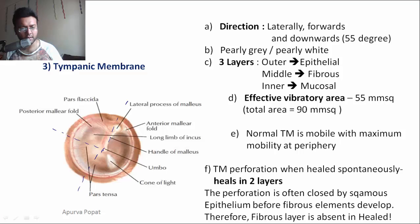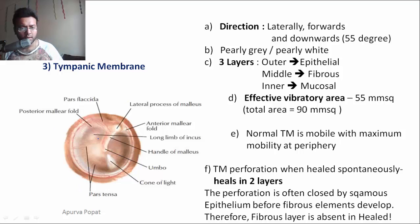The tympanic membrane can be divided into four quadrants using an imaginary line through the handle of malleus and another imaginary line perpendicular to that through the umbo. The four quadrants are: antero-superior, antero-inferior, posterior-superior, and posterior-inferior.